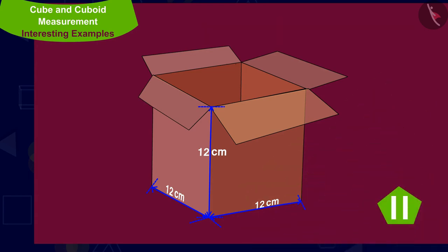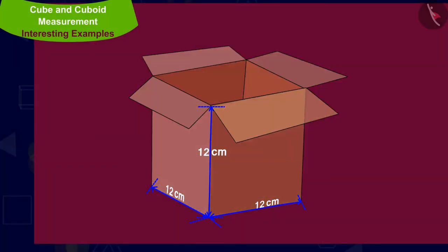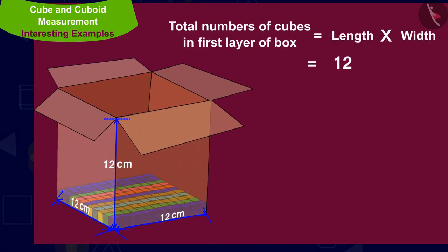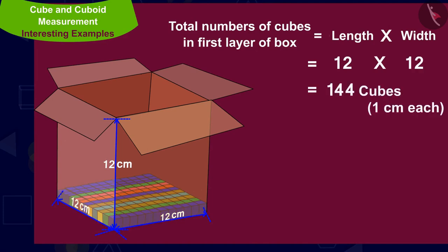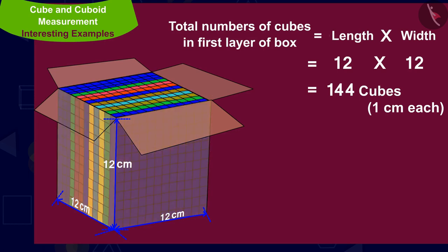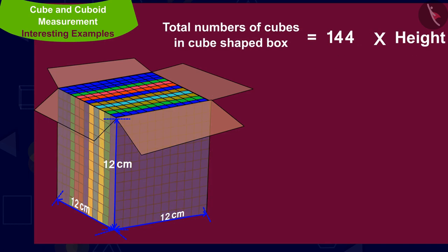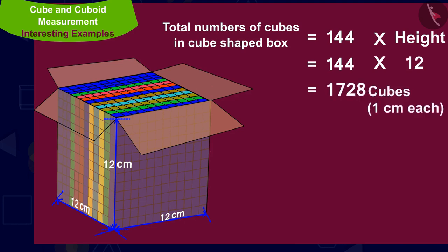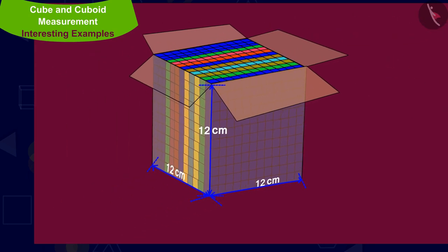If you want, you can find the solution by stopping the video. This box is cube shaped, so its first layer will contain 12 times 12 — that is 144 cubes of dimension 1 centimeter each. The height of this box is also 12 centimeters, so this box will have 12 such layers of cubes of dimension 1 centimeter each. Therefore, this box will contain 144 times 12 — that is 1,728 cubes of dimension 1 centimeter each.